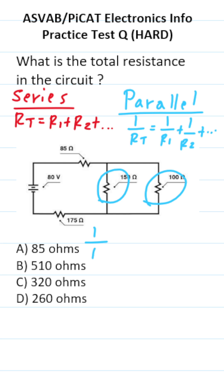1 over RT is going to be equal to 1 over R1. We're going to let R1 be 150 ohms, so that's 1 over 150, plus 1 over 100.